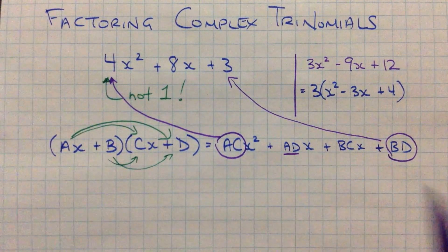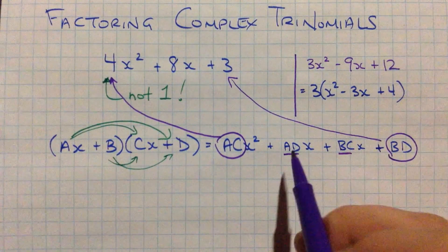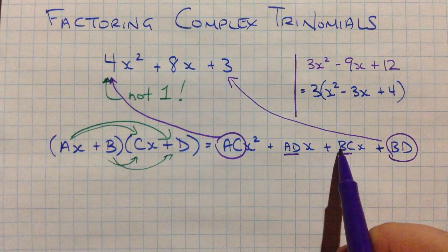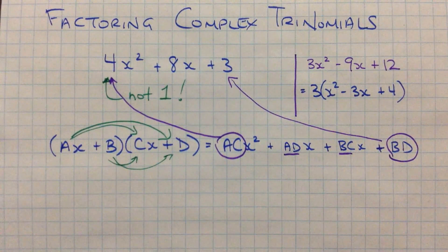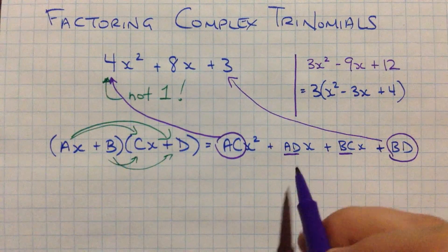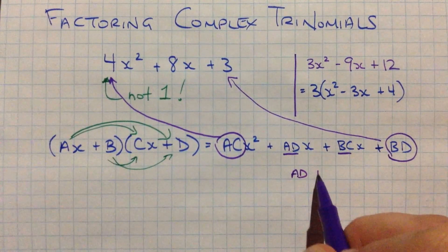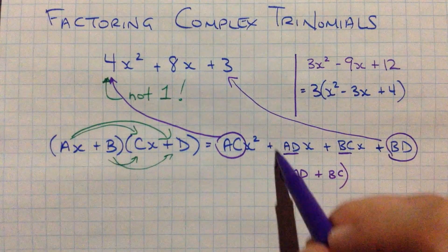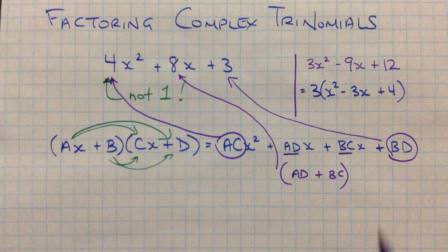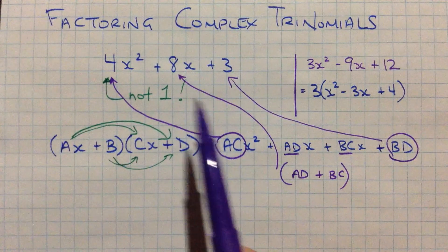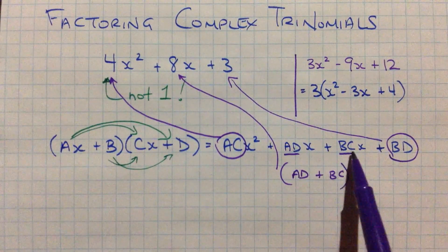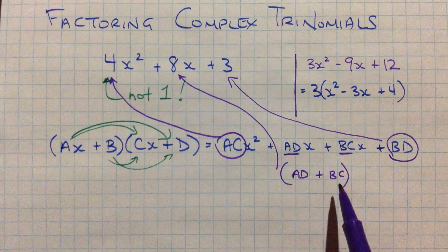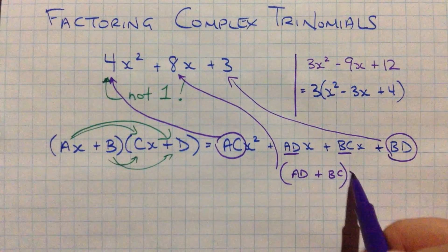So we have a value here, and we have another value here. So we have some number, and some other number, that when you add them together, are going to equal the middle number. So here, ad, some number, plus bc, some other number, together, are going to give me that coefficient for my x term. Right? ad plus bc, those are the two values that add together, if I was to collect this, to give me my x term.